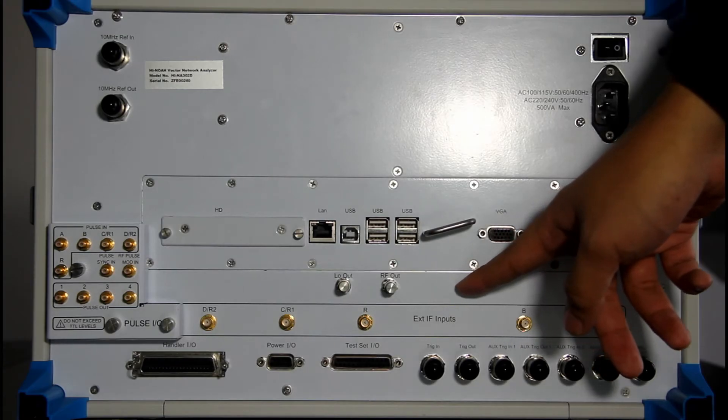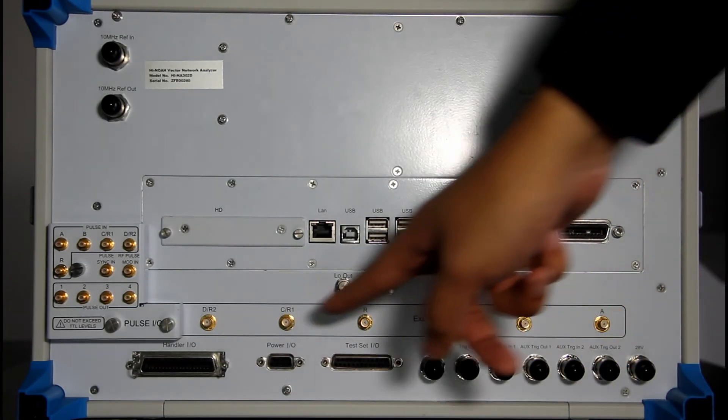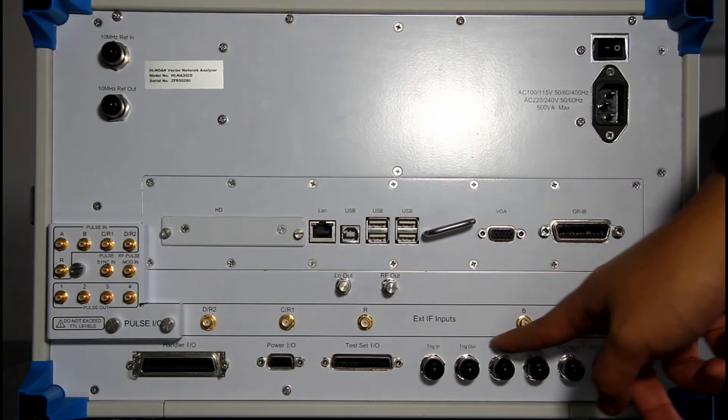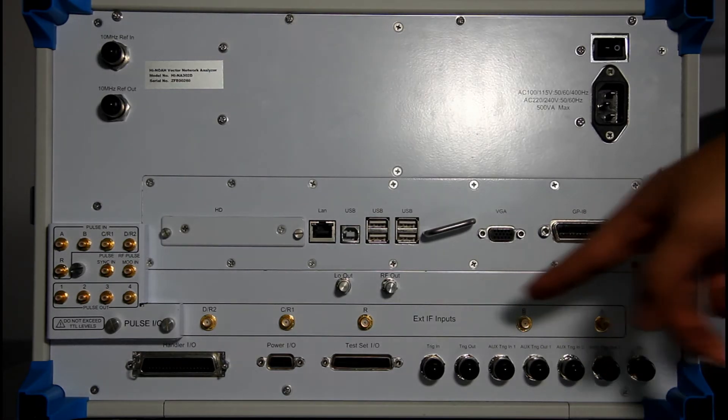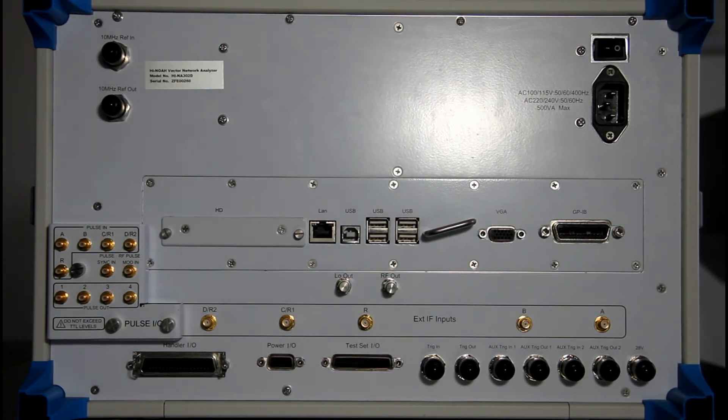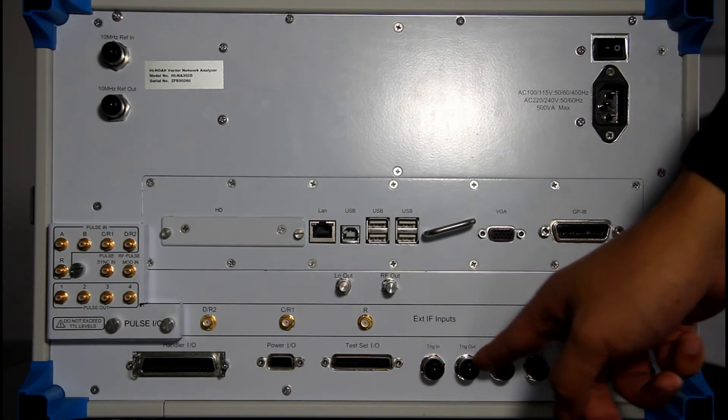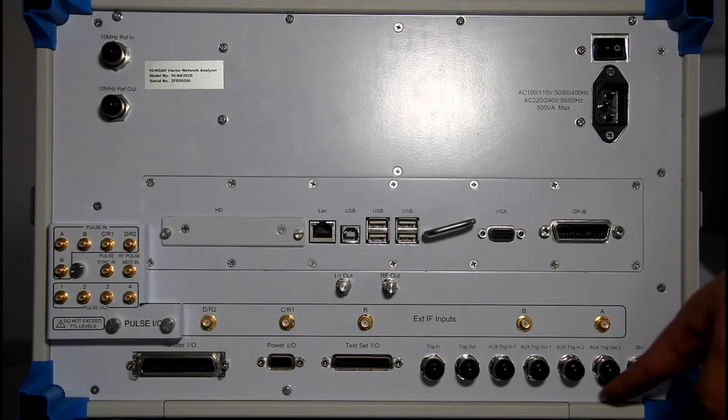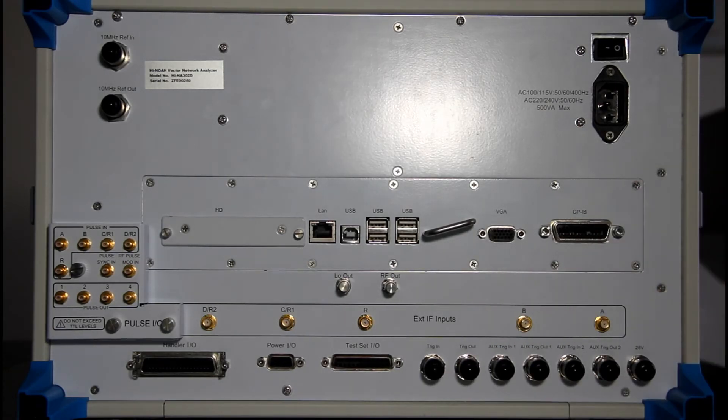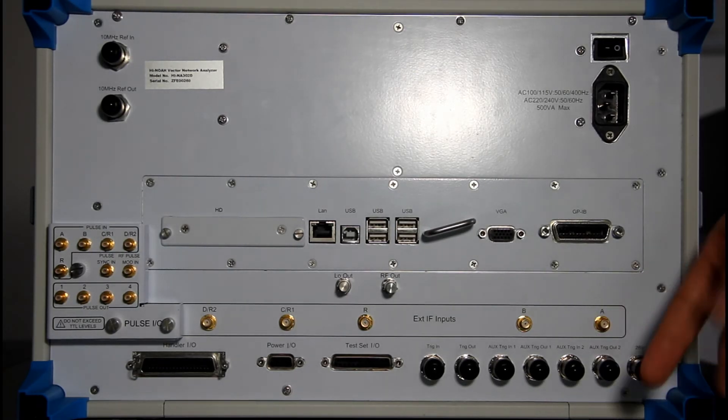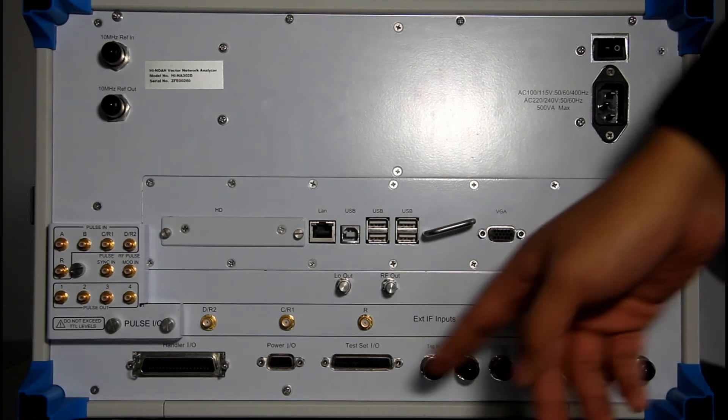LO out and RF out. Interfaces are here. And these interfaces, you can see they are gold. This is the external IF inputs. On the right down corner, most of these interfaces are about the triggers. The trigger function, external trigger, trigger output, trigger input, something like that.